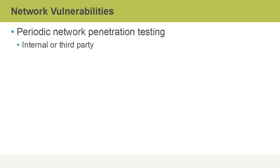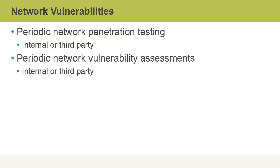We should have periodic network penetration testing, because we can learn a lot about weaknesses we might not realize were there and that were exploitable. This can ideally be done by a third party, but internal penetration tests conducted by our own IT teams are also an option. Periodic network vulnerability assessments should also be conducted, either internally or by a third party. The key difference is that a pen test actually exploits the weaknesses it finds, whereas a vulnerability assessment only reports on them without exploiting them.